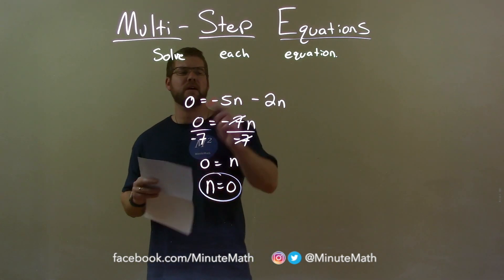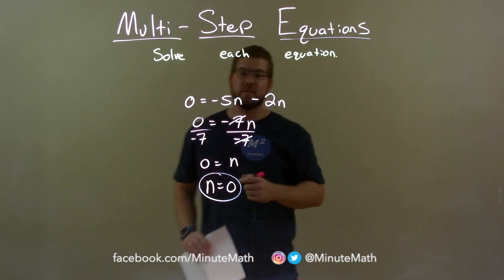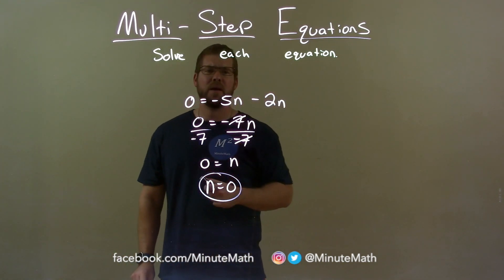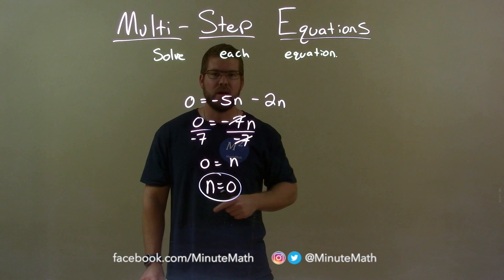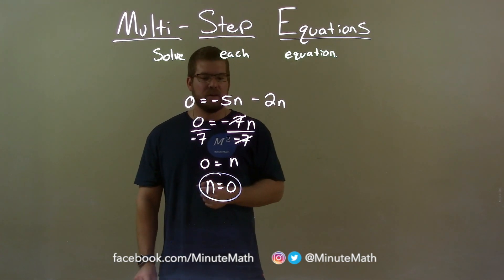Quick recap: we're given 0 equals negative 5n minus 2n, and we have to solve for n. I combined my like terms and got 0 equals negative 7n. Divide both sides by negative 7 to get n by itself, equal to our final answer: 0.